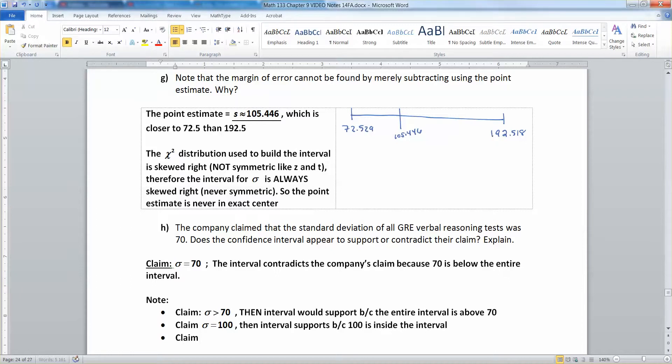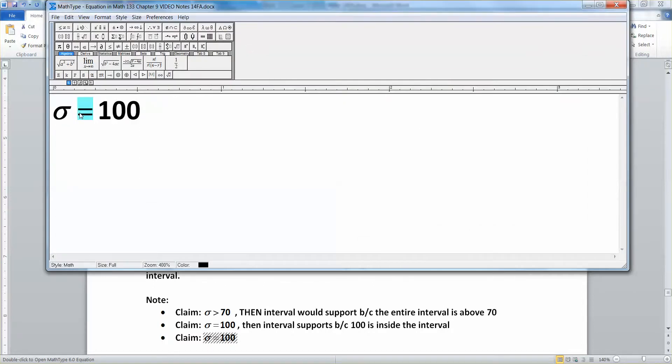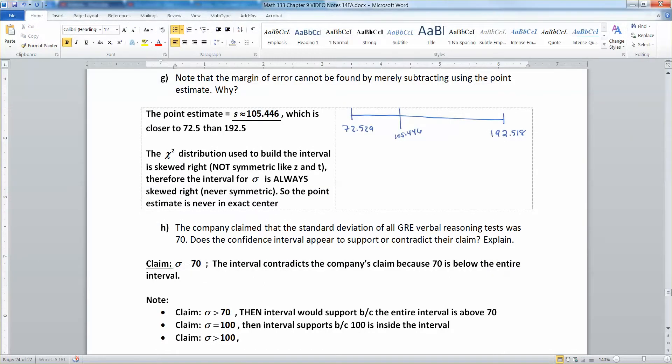If they claim that sigma is above 100, sigma is greater than 100, then the interval contradicts because the interval is not entirely above 100.